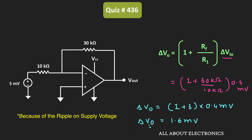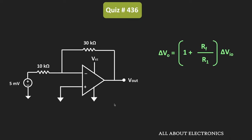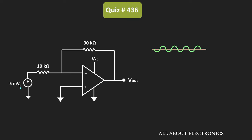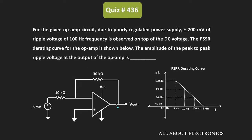Because of the ripple voltage, there will be a change in the input offset voltage, and because of that change in input offset voltage, we will observe a change in the output voltage. That means at the output, we will observe a peak-to-peak ripple of 1.6 mV, which will appear on top of the DC voltage. The DC voltage will get amplified by the op-amp, but on top of that, we will observe a peak-to-peak ripple of 1.6 mV. So the peak-to-peak ripple voltage at the output is equal to 1.6 mV.